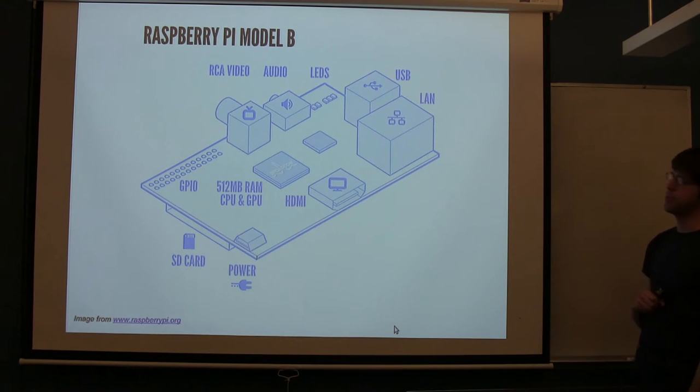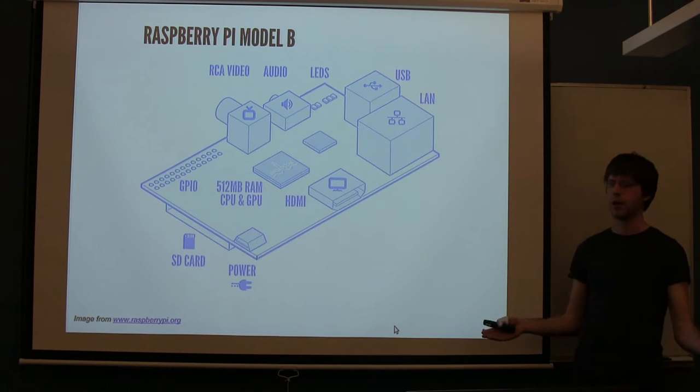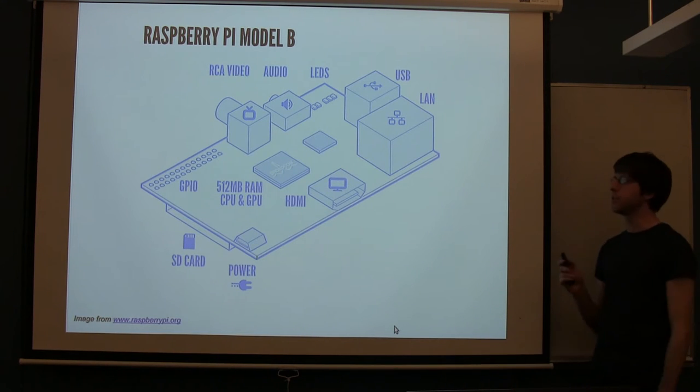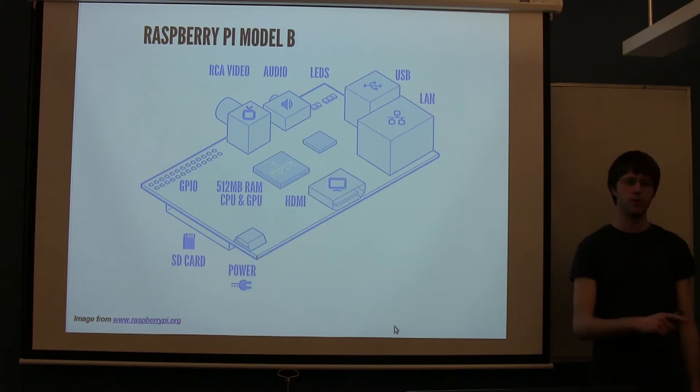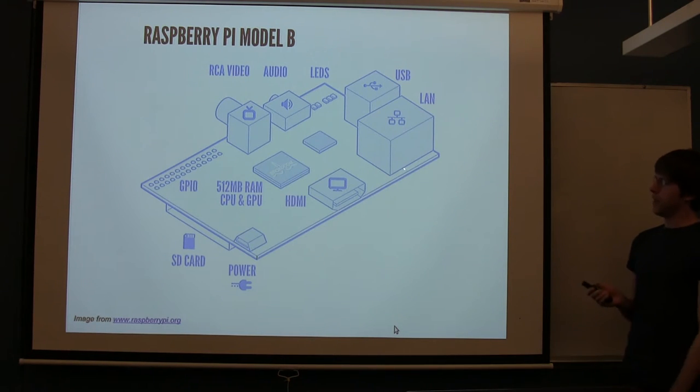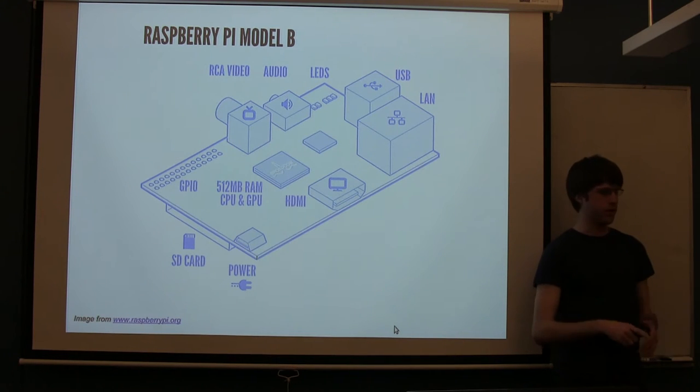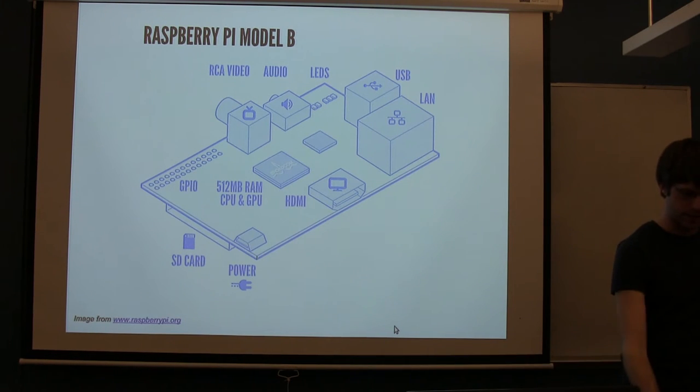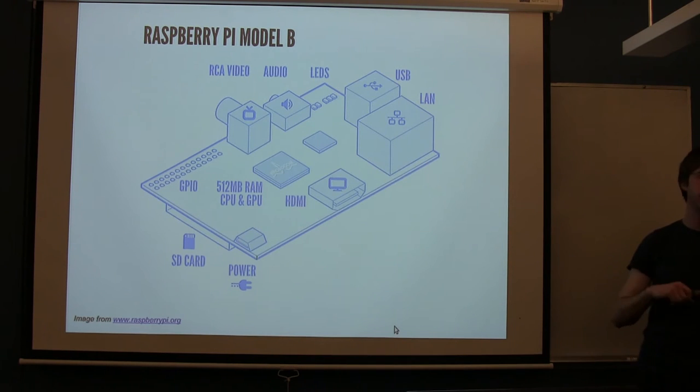It has two USB ports. This is for connecting anything you would normally connect to a USB port: keyboards, mice, external hard drives. There's a few caveats with what you can connect to these USB ports versus what you can do on a normal computer. We'll get to them here in a second. The Model B has this LAN port. So if you want to plug in an ethernet cable like the ones connected to these machines in here, that's your networking connection.